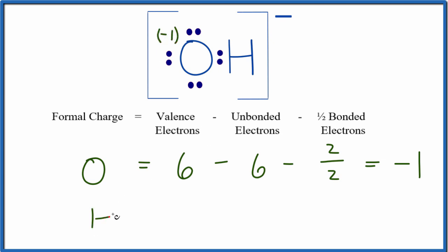For the hydrogen, hydrogen is in group one. It has one valence electron. Unbonded? It has no unbonded electrons because all of its electrons, all the electrons here are shared between the hydrogen and the oxygen. So we have one, two, over two.